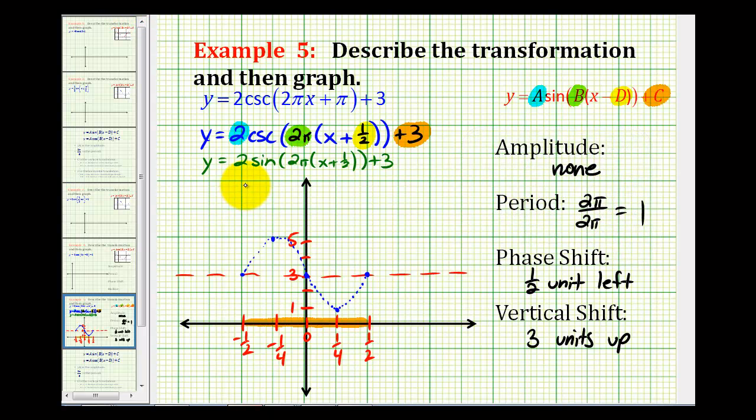So we'll have vertical asymptotes here, here, and here. And then from here, remember that corresponding cosecant and sine functions share this maximum value for sine here, and then the cosecant function would approach the asymptotes from here and here.